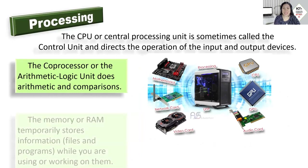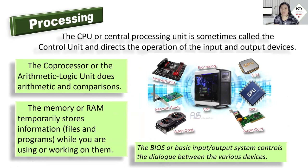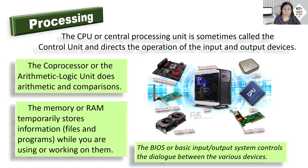Another basic operation is processing. Everything we enter into the computer is being processed. The processing part — the CPU or Central Processing Unit — is sometimes called the control unit, and it directs the operation of the input and output devices. The coprocessor or arithmetic logic unit does arithmetic and comparisons. There is a part of the processing unit called the arithmetic logic unit, and we also have the control unit.